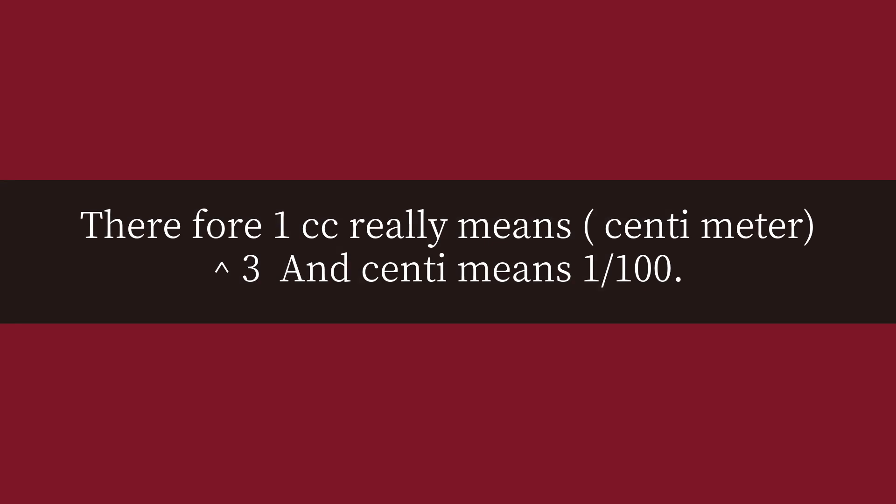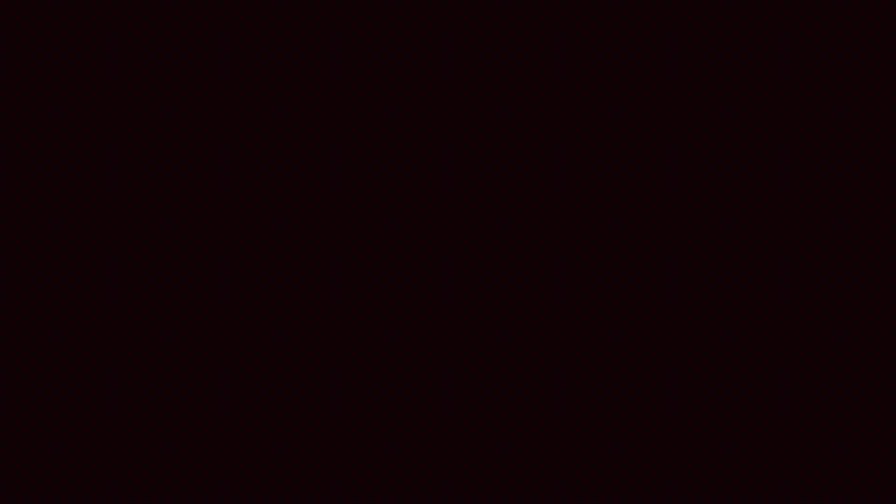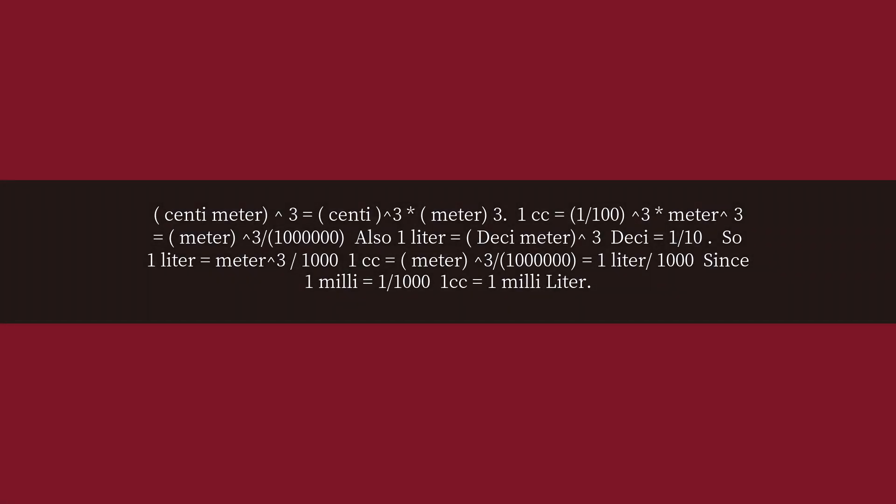Therefore, 1 cubic centimeter really means centimeter^3. Since centi means 1/100, centimeter^3 equals (centi)^3 × meter^3. So 1 cubic centimeter equals (1/100)^3 × meter^3.